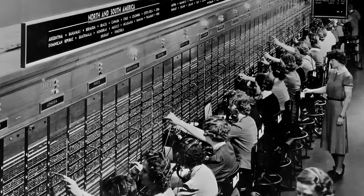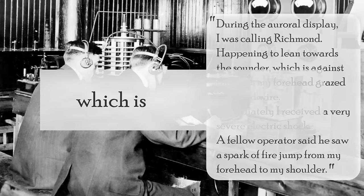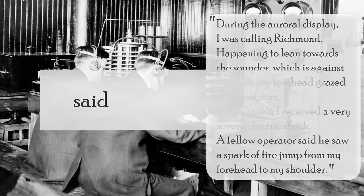Operators reported electrocutions, ignition of telegraph paper, and telegraph transmission towers were sparking. One telegraph operator reported: During the auroral display, I was calling Richmond. Happening to lean towards the sounder, which is against the wall, my forehead grazed a ground wire. Immediately, I received a very severe electric shock. A fellow operator said he saw a spark of fire jump from my forehead to my shoulder.